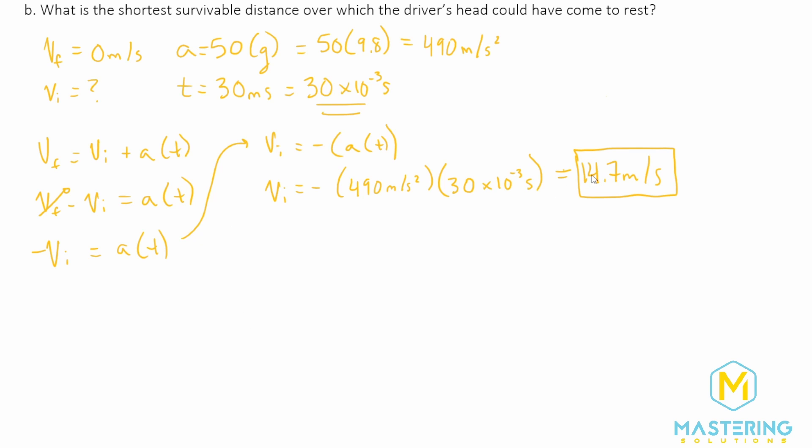So now they want us to solve for what is the shortest survivable distance for this situation for the head to stop in the car crash. And so now we're going to be using this initial velocity that we found, and we can plug that into one of the other kinematic equations.